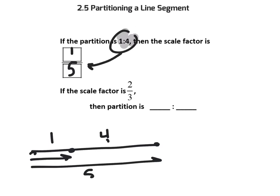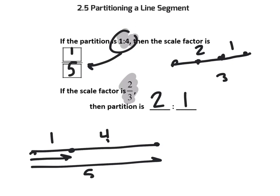Let's go the other way. What happens if the scale factor is 2 to 3? That means there were 3 total parts and you were 2 away. So this would actually be 2 to 1 as the partitioning ratio. I'm just showing you how to go between the two worlds.